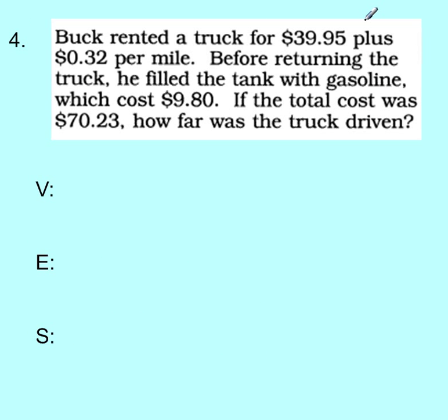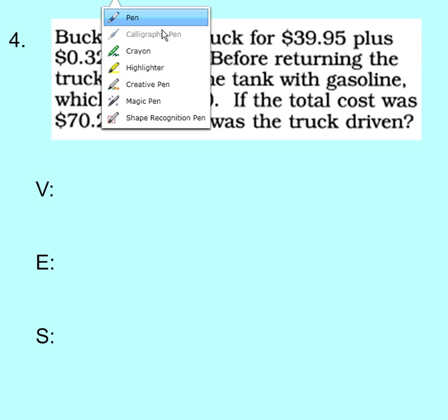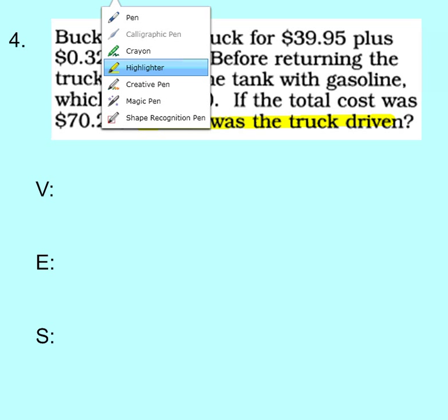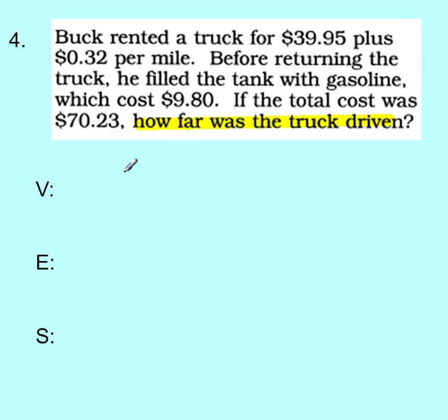Now, number four. Here we go. Highlight your question down here. If the total cost was $70.23, how far was the truck driven? So we're looking for a distance. And we're measuring distance in miles, right? So that variable is going to be M is for miles driven. The truck was driven. Everything equals. Now, Buck rented a truck for $39.95 plus 32 cents per mile. And then we have filled the tank with gas, which costs $9.80. If the total cost was $70.23, how far was the truck driven?